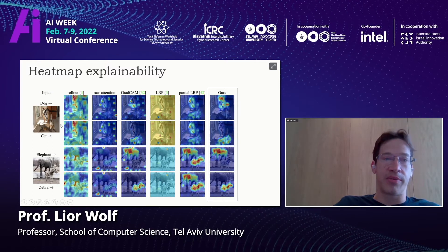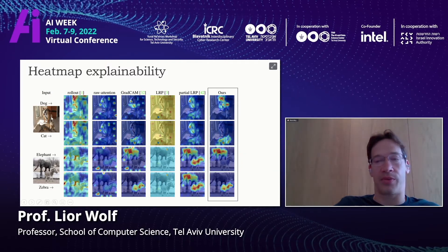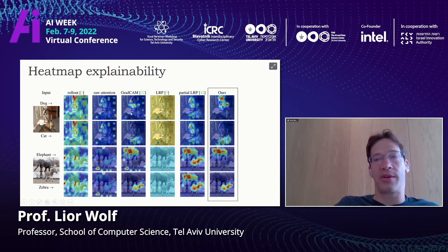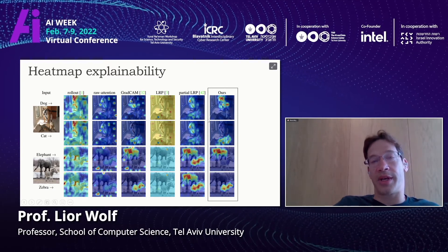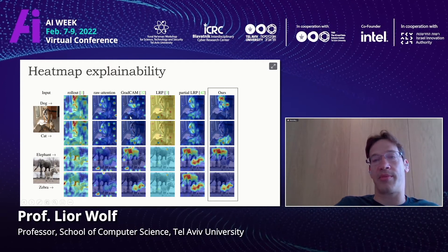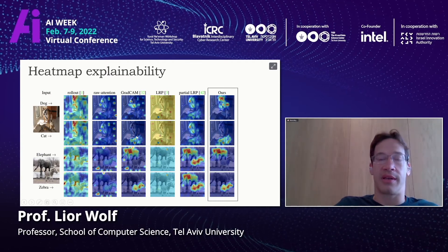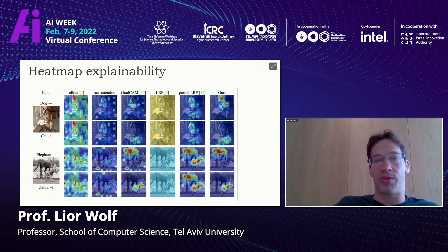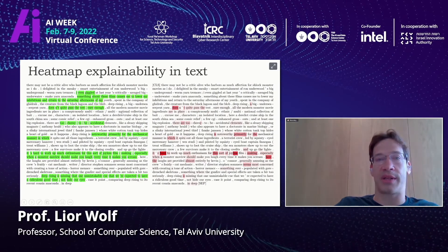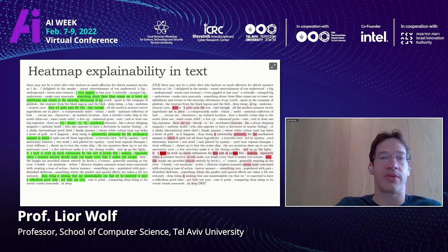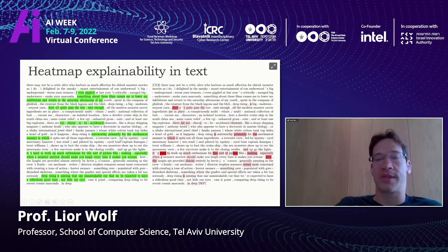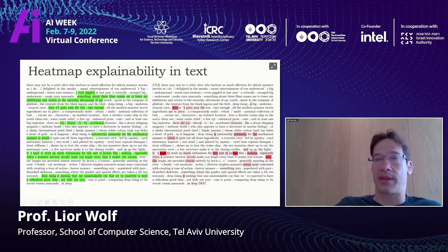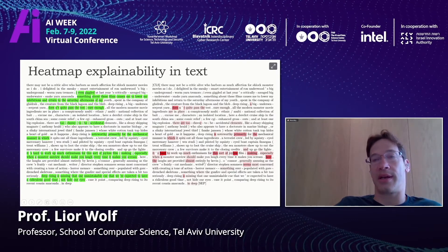For an input image containing a dog and a cat, the method highlights the dog for the label 'dog' and highlights the cat for the label 'cat.' Other methods either produce the same explainability map for both objects or give very partial results. This also works for text — in sentiment analysis, when asked to explain a positive label, the positive words are highlighted; for a negative sentiment, the negative words are highlighted.